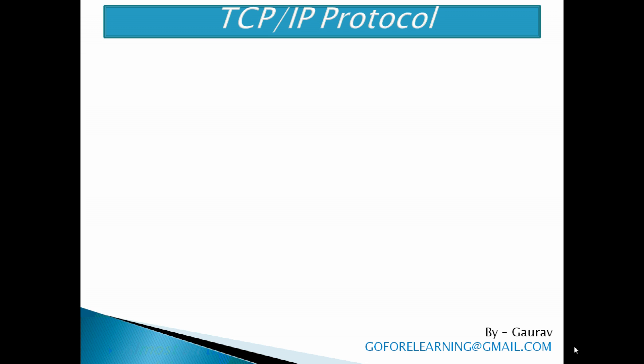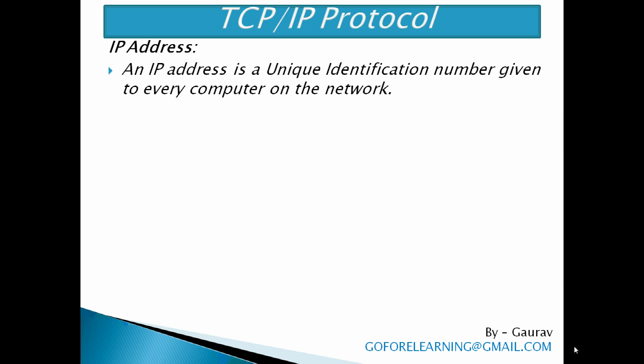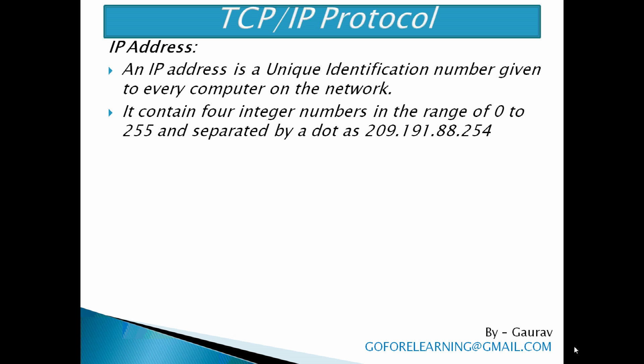There are some important terms used in networking. IP address: to send data from one place to another, the computer should be correctly identified on the network. This is done with the help of an IP address. An IP address is a unique identification number given to every computer on the network. It contains four integer numbers in the range of 0 to 255, separated by a dot, such as 209.191.88.254.